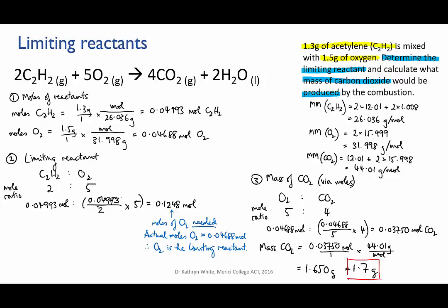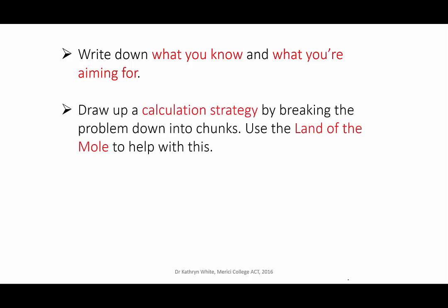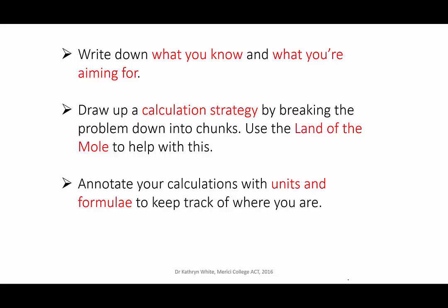So there you are. That's quite a long calculation, but when it's broken down into parts, each part is quite simple. The most difficult bit of stoichiometry is working out your strategy — what calculations do I need to string together to solve this problem? Remember these tips: write down what you know and what you're aiming for. Draw up a calculation strategy by breaking the problem into chunks. Use the land of the mole to help with this. Annotate your calculations with units and formulae to keep track of where you are. And, lastly, practice.